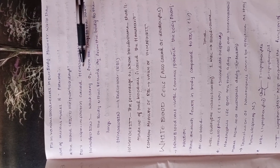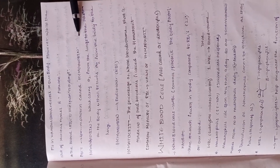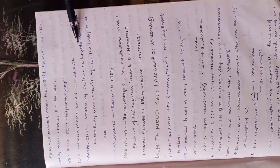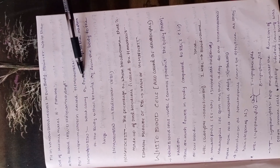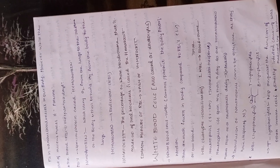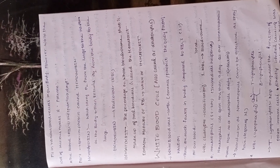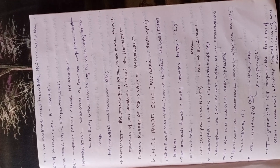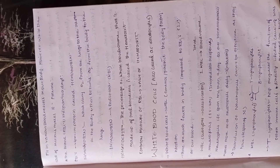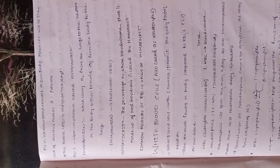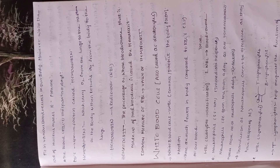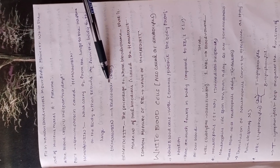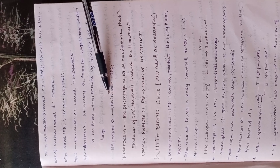RBCs contain a special protein called hemoglobin, which carries oxygen from the lungs to the rest of the body and returns carbon dioxide from the body back to the lungs. During inhalation, oxygen goes to the lungs and then the rest of the body; CO2 is exhaled. The red color of blood is also due to the presence of hemoglobin.